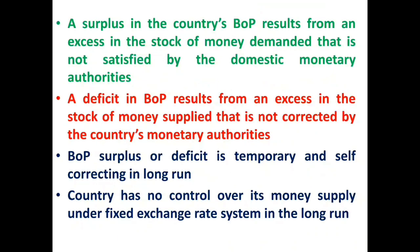In other words, a surplus in the country's balance of payment results from an excess stock of money demanded which is not satisfied by the monetary authorities, while a deficit results from an excess stock of money supplied not corrected by the monetary authority. In either case — whether a surplus or deficit in balance of payment — both will be temporary and self-correcting in nature. When exchange rates are fixed, the country has no control over money supply in the long run; adjustment will automatically take place through the inflow or outflow of money.